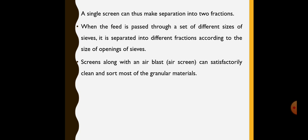When the feed is passed through a set of different sizes of sieve, it is separated into different fractions according to the size of opening of sieves. Such screens also have provision of air blast arrangement. With the help of this air blast arrangement, the performance of the machine or air screen cleaner gate increases, also the efficiency of the machine gate improves. These machines along with an air blast or air screen can satisfactorily clean and sort most of the granular materials.